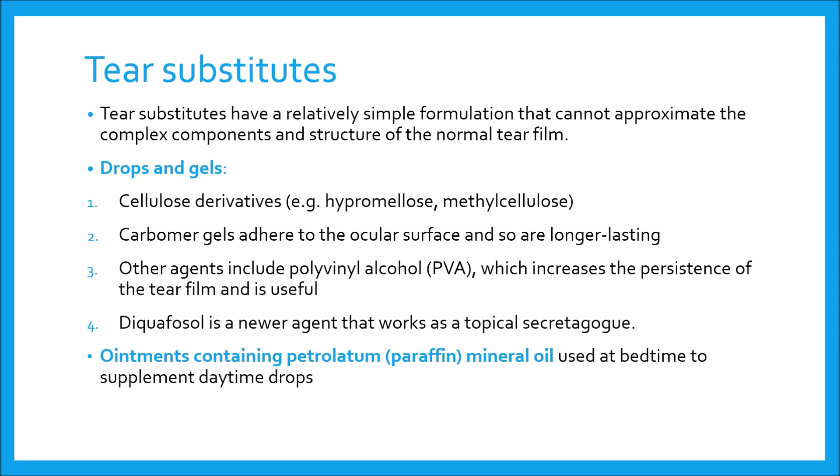Different types include: number one, drops and gels. A large range of preparations is available. No single agent or category of preparation has demonstrated superiority, and particular agents are often preferred by individual patients with limited rationale. Cellulose derivatives such as hypromellose and methylcellulose are appropriate for mild cases. Carbomeric gels adhere to the ocular surface and are longer lasting, but some patients are troubled by slight blurring. Other agents include polyvinyl alcohol, which increases the persistence of the tear film and is useful in mucin deficiency.